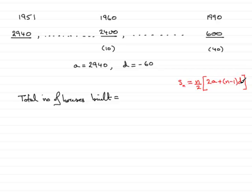There is another formula you could use: n over 2 multiplied by the first term plus the last term. Do try and remember these formulas.